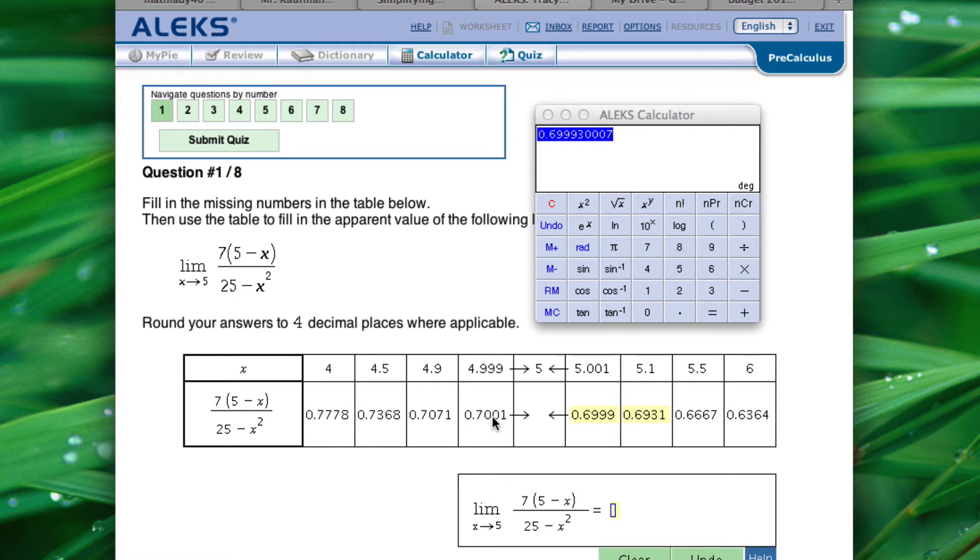So what we need to do is see what are these two numbers getting closer and closer to? Well, they're going to get closer and closer to .7, 0.70000. So that's to the nearest fourth decimal. And that's the answer for this question.